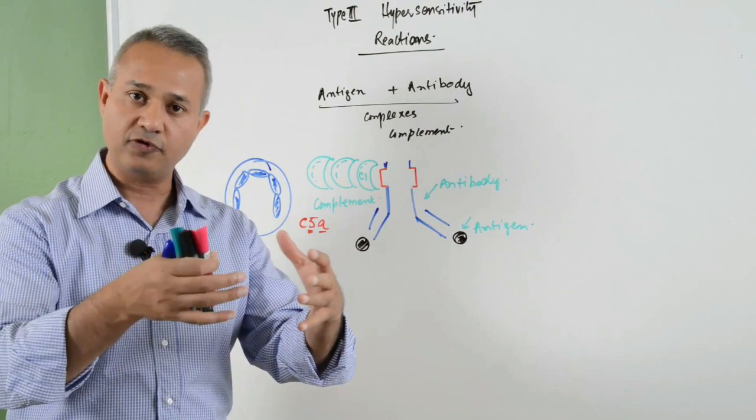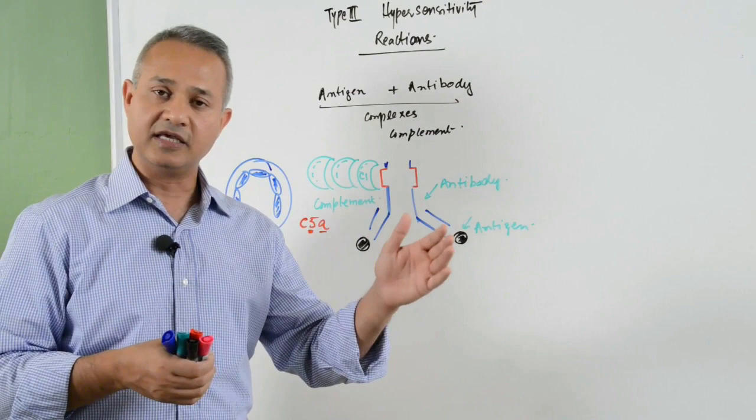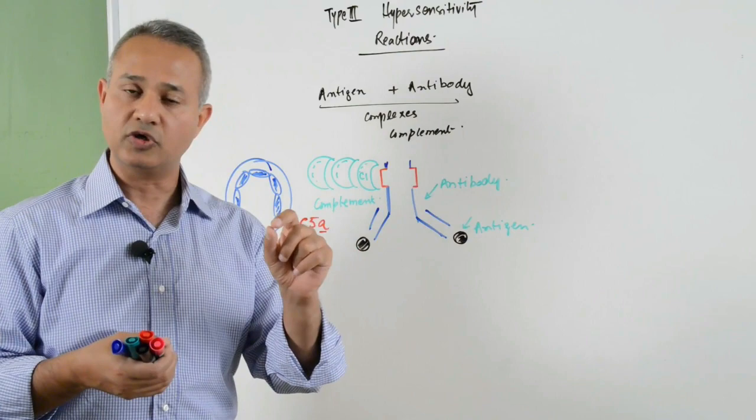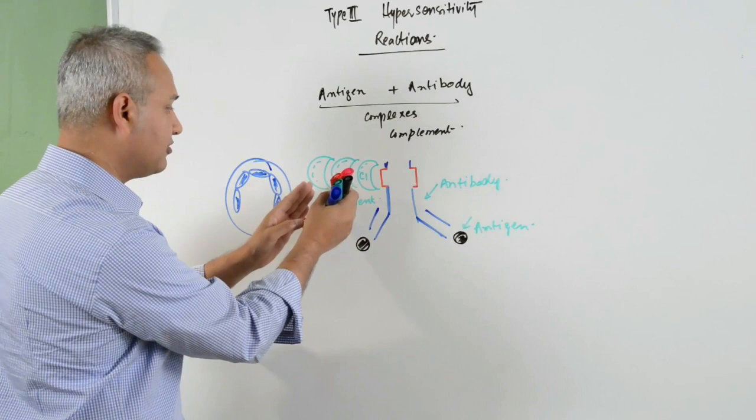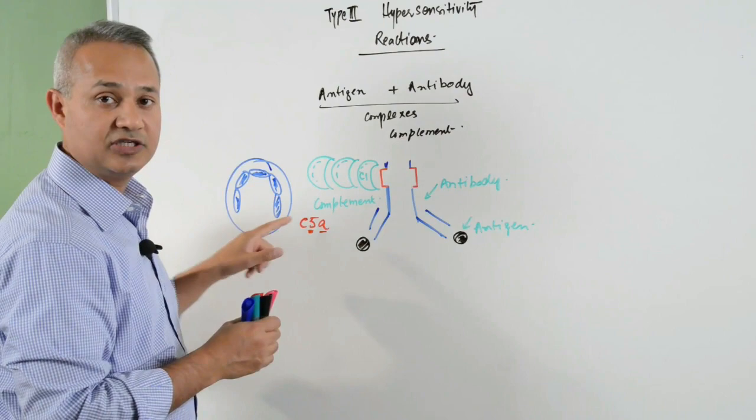Then it settles down mostly on the membranes. For example, kidney is very important, then arthritis is caused by the settling down of these things on the joint membranes as well. Wherever this complex is present, wherever the complement is fixed, that is where the neutrophils are going to come.